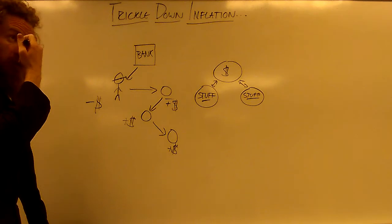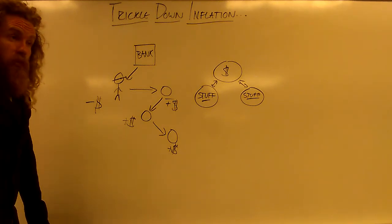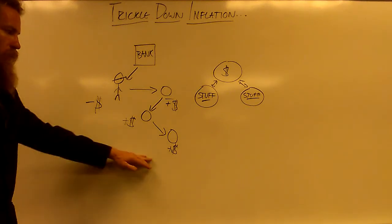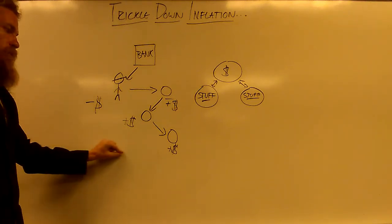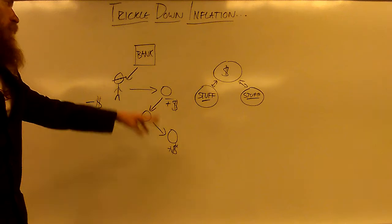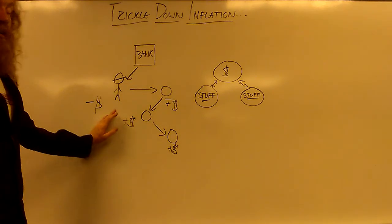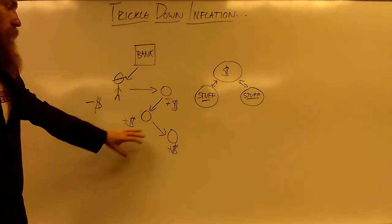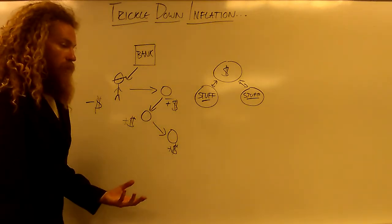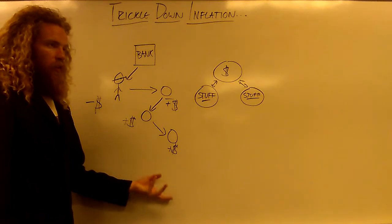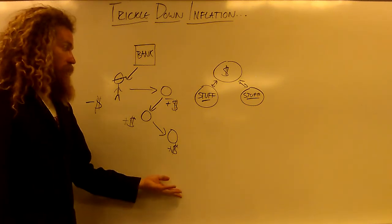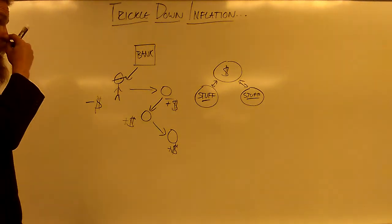Trickle-down inflation is pretty much the cause of modern-day slavery. So many people are at the bottom, and even in the middle you're just... in the middle. The top has abundant money and can spend it at the lower half's expense — the cost of everything down there goes up. If you're below that line, you're essentially enslaved to the top half.